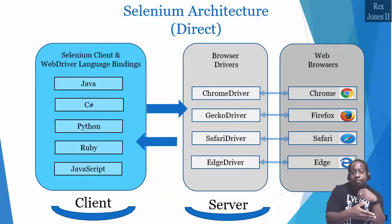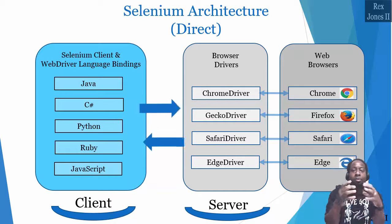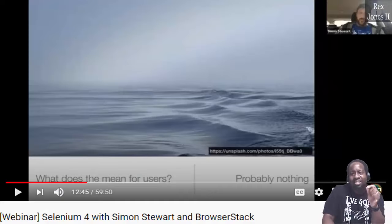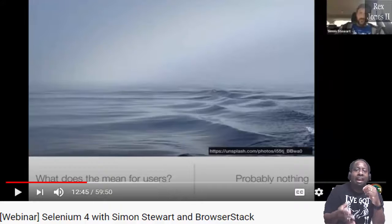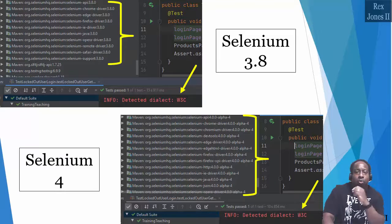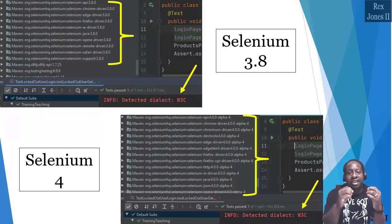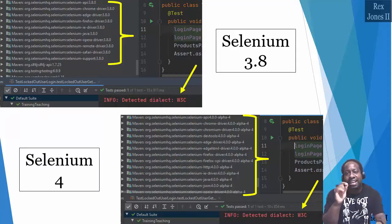You may have noticed that Selenium added support for W3C Protocol starting at version 3.8. According to Simon Stewart, in a Selenium 4 webinar with BrowserStack, he mentioned that versions of Selenium since 3.8 have spoken to both JSON Wire Protocol and W3C Protocol. After running your test script, look for 'Info Detected Dialect W3C' to see if your Selenium version is speaking to W3C. Both screenshots show W3C for Selenium 3.8 and Selenium 4. If not W3C, it will show OSS, which means Open Source Software.